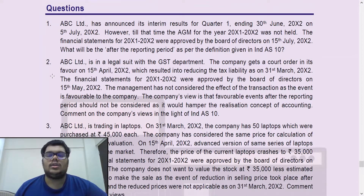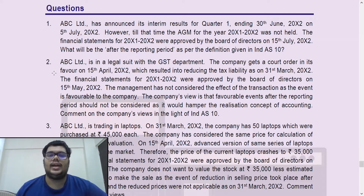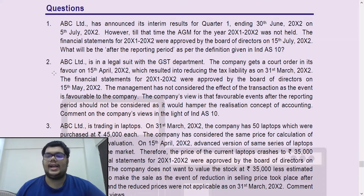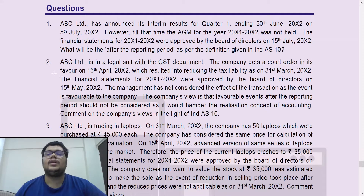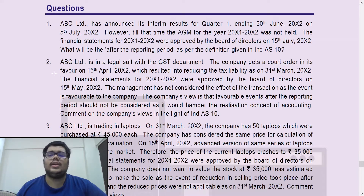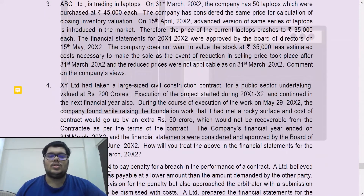ABC Limited has announced its interim results for quarter one ending 30th June 20X2 on 5th July X2. However, till that time the AGM for the year X1-X2 was not held. The financial statements for X1-X2 were approved by the board of directors on 15th July X2. So when were the financial statements approved by the BOD? On 15th July X2 — that signifies the end of the reporting period as per the definition in Ind AS 10. So the question asks: what will be the period after the reporting period?